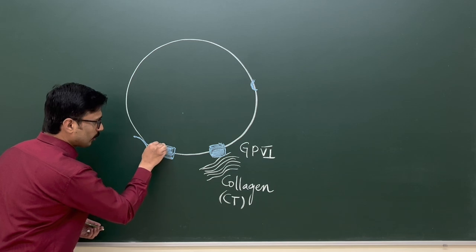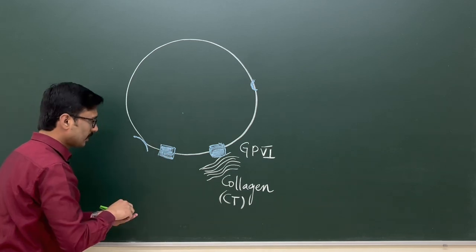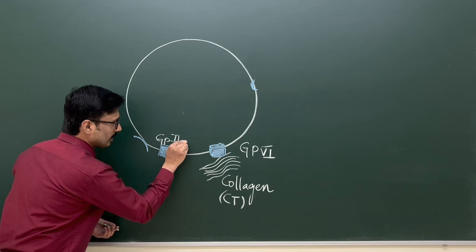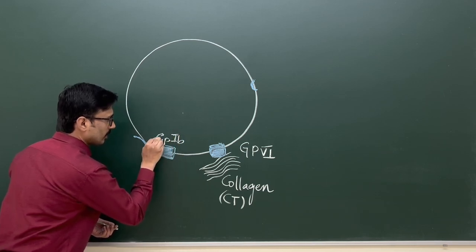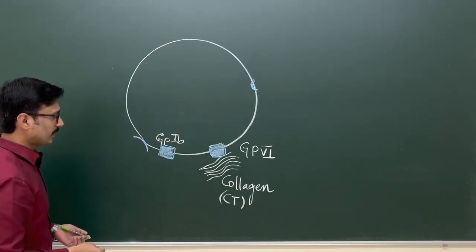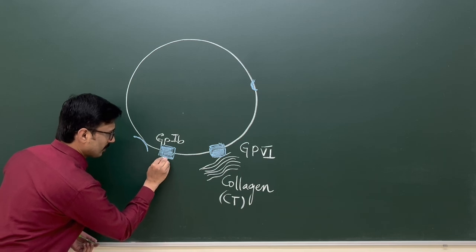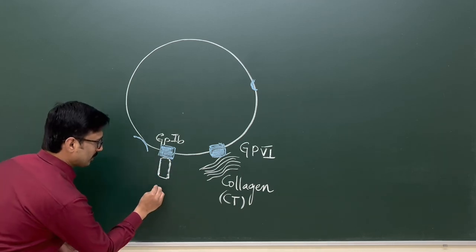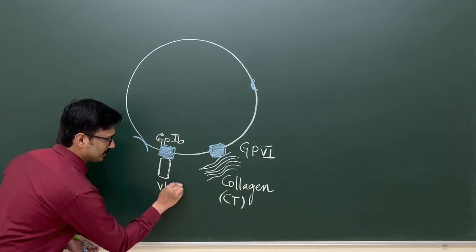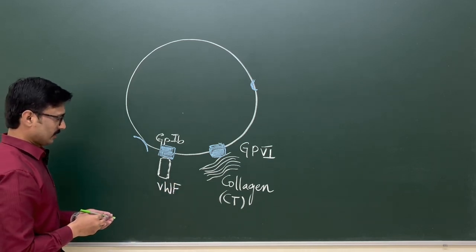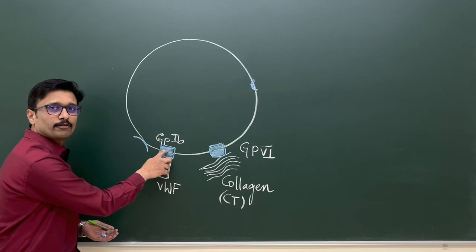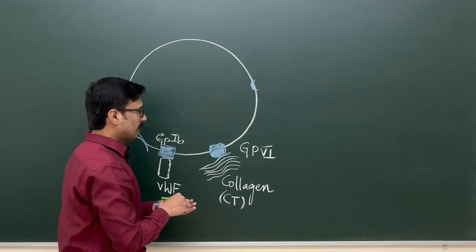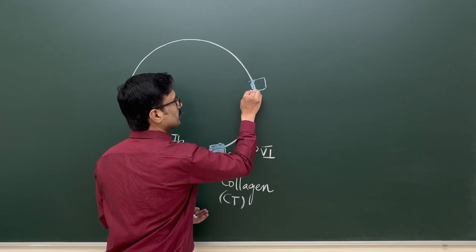There is another glycoprotein receptor called Glycoprotein 1b (GP1b). This GP1b receptor will bind to a protein molecule called von Willebrand factor.